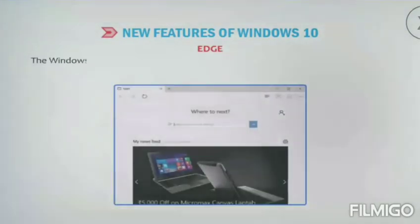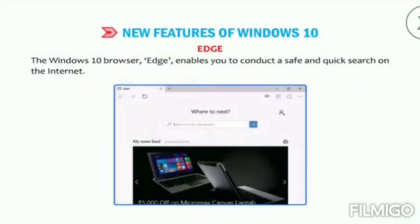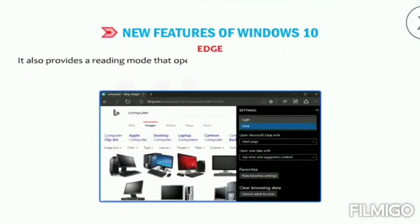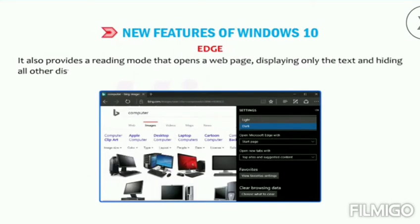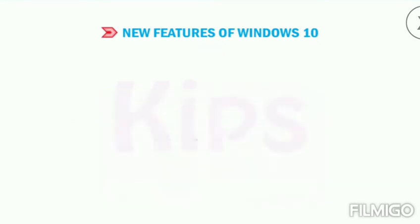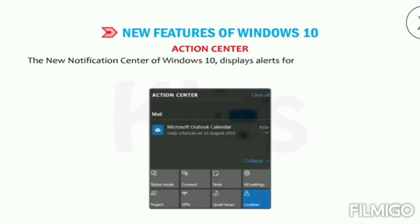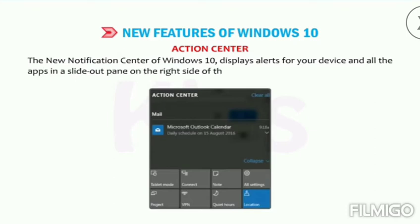Edge — the Windows 10 browser Edge enables you to conduct a safe and quick search on the internet. It also provides a reading mode that opens a web page displaying only the text and hiding all other distractions such as graphics and images. You can also save your articles and annotate the web page directly. Action Center — the new notification center of Windows 10 displays alerts for your device and all the apps in the slide-out pane on the right side of the desktop.